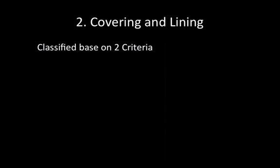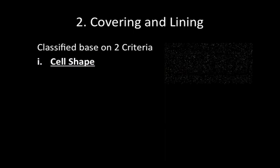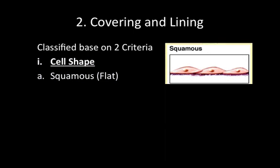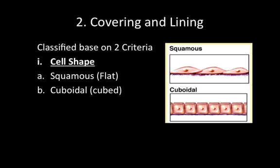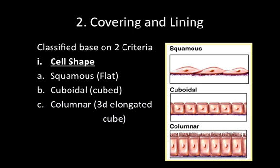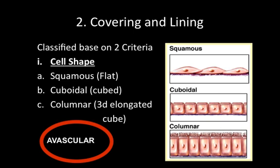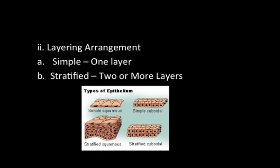Now let's look more closely at covering and lining epithelium. These are classified — meaning named — based on two criteria. First, cell shape: flat cells are called squamous; three-dimensional cube-shaped cells are called cuboidal; and columnar cells are like cuboidal but elongated. All covering and lining epithelium is avascular, meaning there are no blood vessels between the cells. The second criterion is layering: one layer is simple, and two or more layers is stratified.